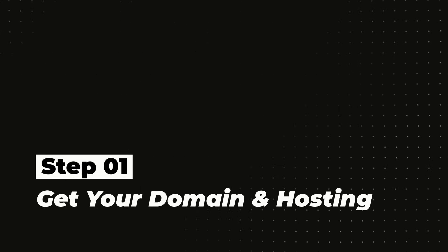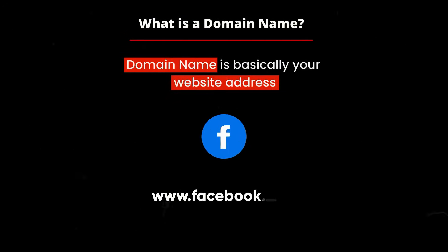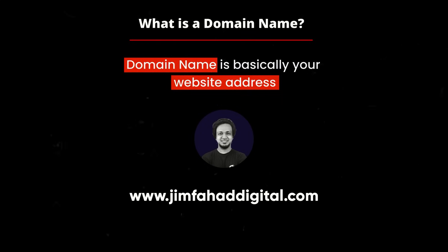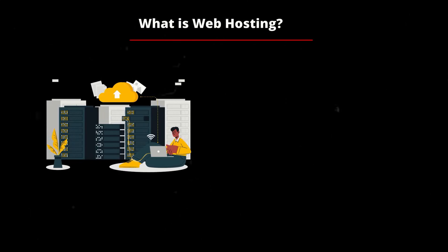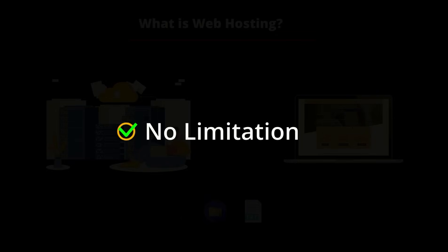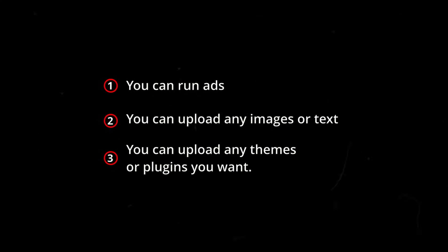Let's start with step one: getting your domain name and web hosting. A domain name is your website address — like facebook.com, amazon.com, or jimfahaddigital.com. Web hosting is the storage space for your website where all your images and text are stored. Since you own your own web hosting, there are no limitations — you can run ads, upload images, themes, or plugins. You are in charge of your website.